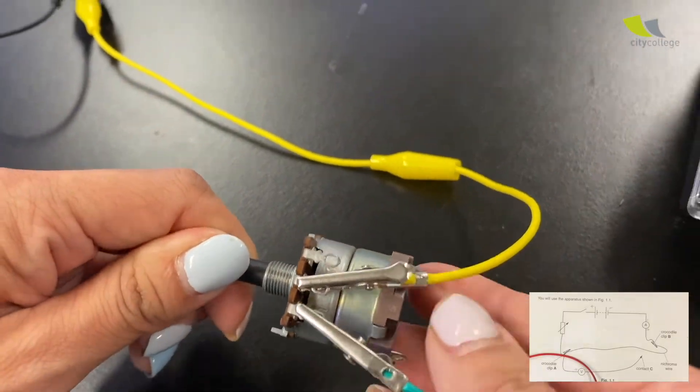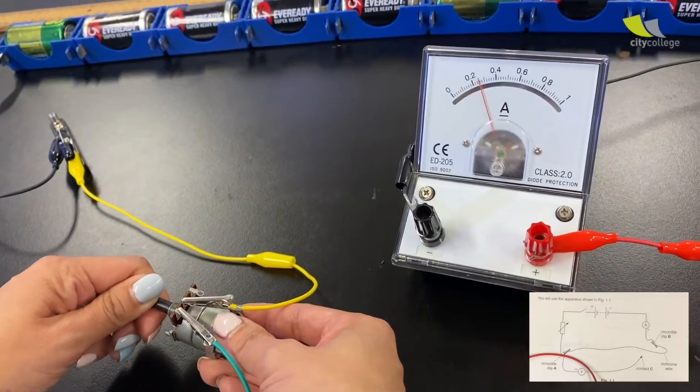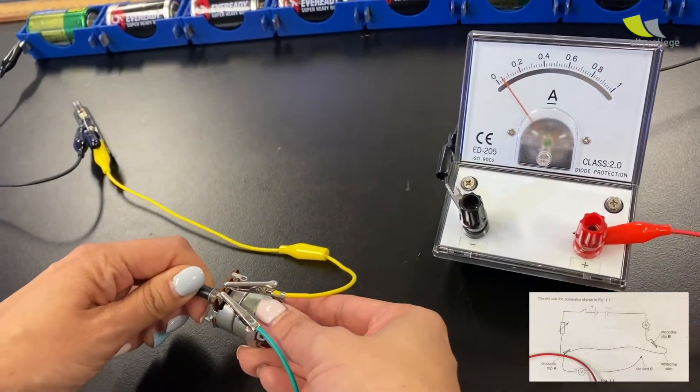The two crocodile clips that are clipping to the variable resistor cannot touch each other. If not, it will skip the resistance. So see? As she turns. Yeah. So half the job done.